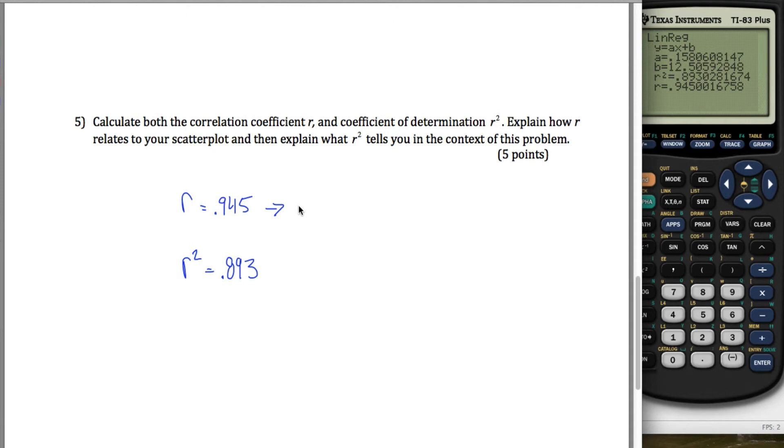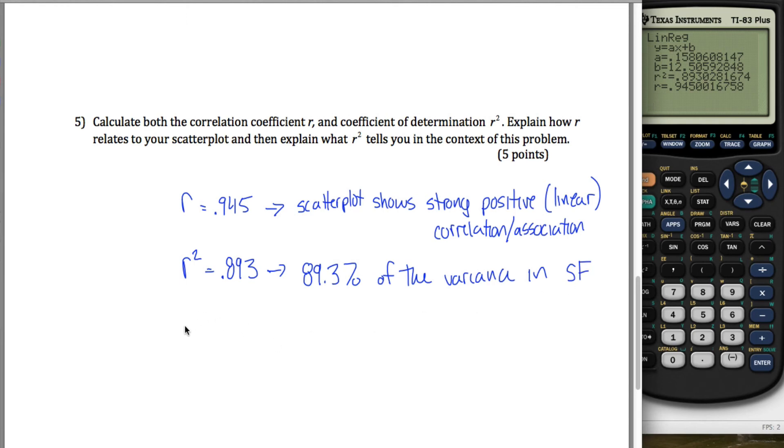And what that tells you is that scatterplot shows strong positive correlation or association. It's linear, but I'll put that parenthetically because if you leave that out, that's fine. Either of those words are fine. R squared equals 0.893. What that tells you is 89.3% of the variance in points scored is explained by temperature.